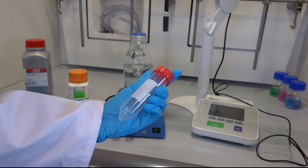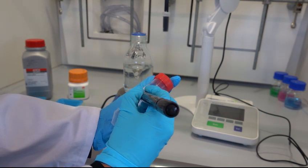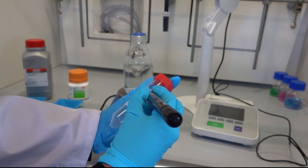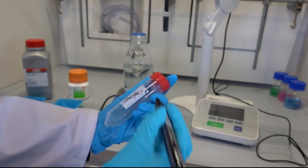Meanwhile, we could take a 50 ml falcon tube for preparation of 50 ml of buffer B and label it.